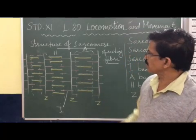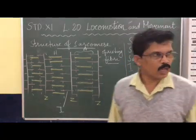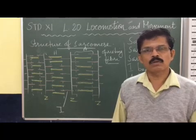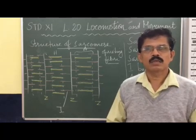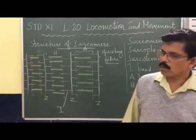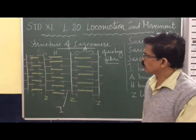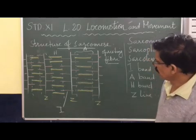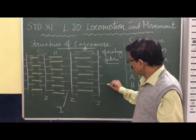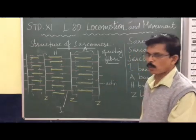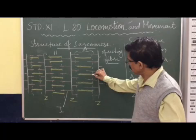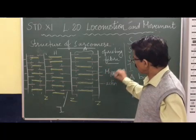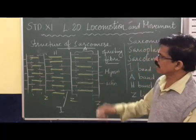Today I am repeating: what is the sarcomere? Sarcomere is the functional unit of the muscle fibers. It is the sarcomere that undergoes contraction and relaxation during the action of the muscles. The contraction and relaxation of the sarcomere is due to the presence of myofilaments called actin and myosin. Actin are thin protein filaments, whereas the yellow ones are myosin, which are thicker. They are arranged in an alternating manner in the sarcomere.